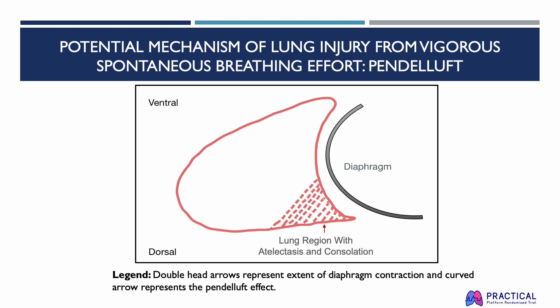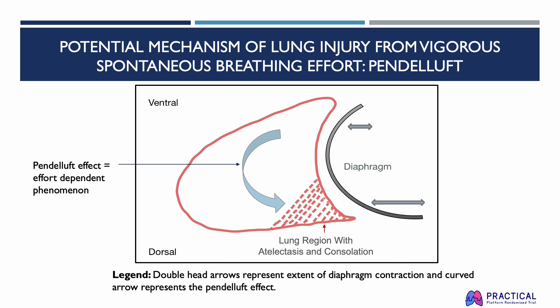This slide illustrates the Pendeluft effect, an effort-dependent phenomenon that only occurs if spontaneous efforts are vigorous, not during small and minimal efforts. When a patient spontaneously breathes, the dorsal diaphragm contracts more than the ventral region, generating more inflation at the back of the lung. Normally, these inflationary forces are redistributed evenly throughout the lung. However, when there is significant atelectasis and consolidation, the inflationary forces are concentrated in the dorsal lung regions and do not redistribute evenly, causing air to be drawn from the front to the back of the lungs, creating the Pendeluft effect. This implies that the dorsal lung region is overinflated and potentially injured by spontaneous breathing efforts.